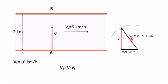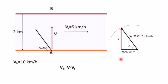VB equals V minus VR, which is 10 km per hour as given. The required direction of this velocity can be found from the right-angle triangle: cos theta equals 5 divided by 10, giving theta equals 60 degrees. So the boatman should row at 60 degrees from the horizontal to reach directly opposite point B.